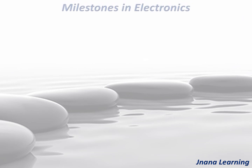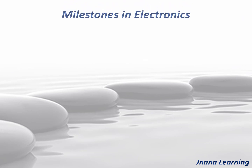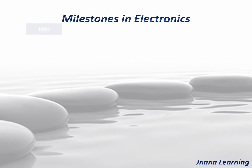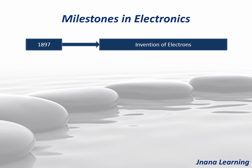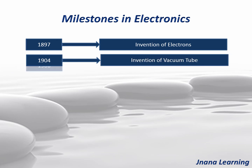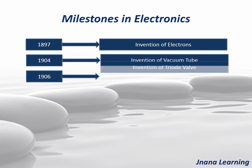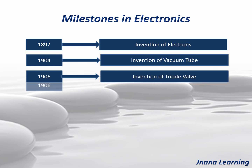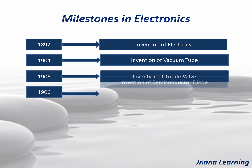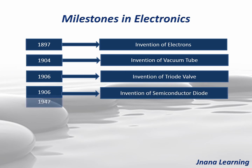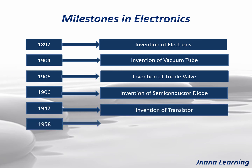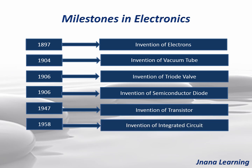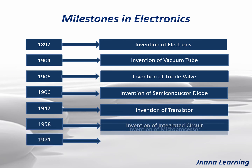The important milestones in the development of electronics happened in the following years: in 1897 the invention of electrons, in 1904 invention of vacuum tube, 1906 invention of triode valve, again in 1906 the invention of semiconductor diode, in 1947 invention of transistor, 1958 invention of integrated circuit, and finally 1971 invention of microprocessor.